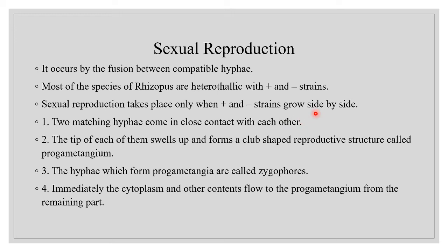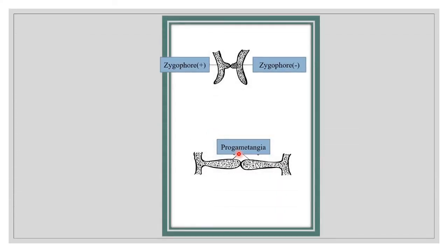At the time of sexual reproduction, two matching hyphal branches belonging to two opposite strains come closer and are called zygophores. The zygophore of the plus hypha and the zygophore of the minus hypha meet at a point. From the point of contact, each zygophore swells up and forms a club-shaped reproductive structure called a progametangium.